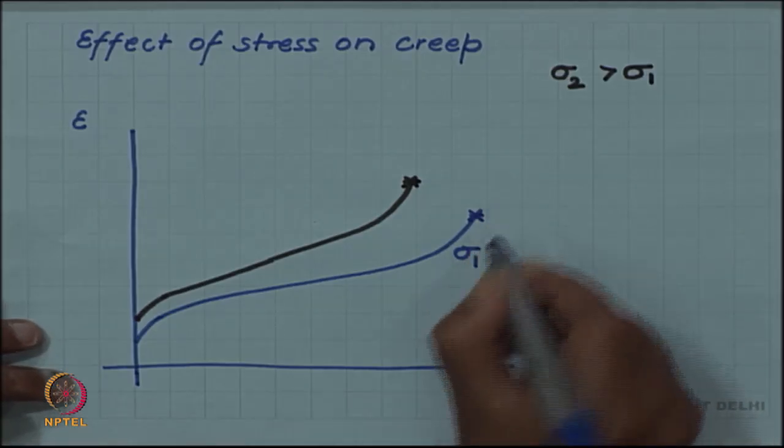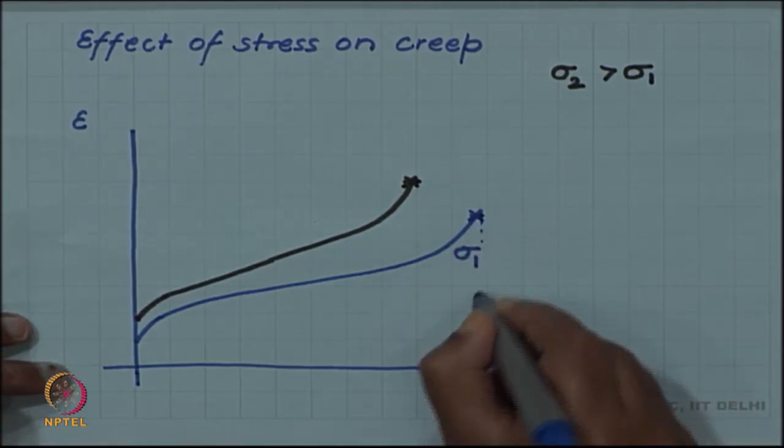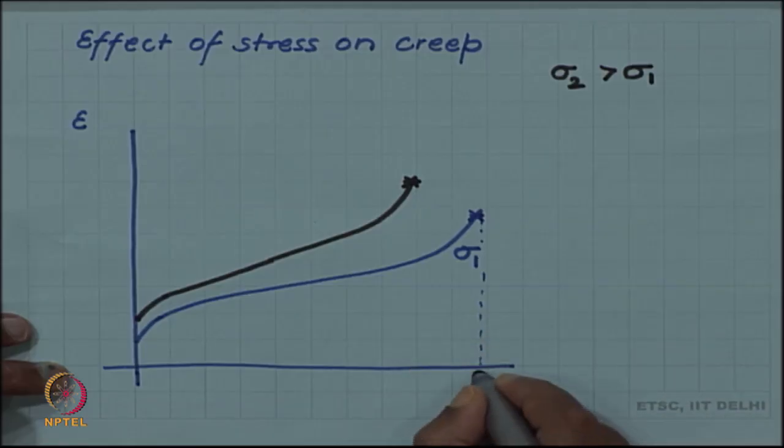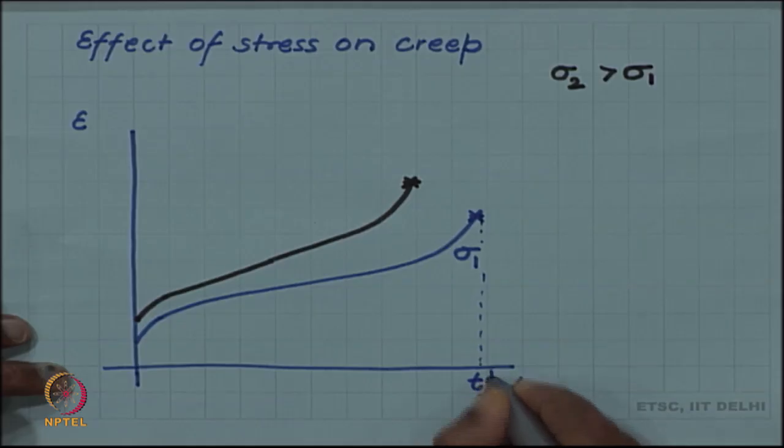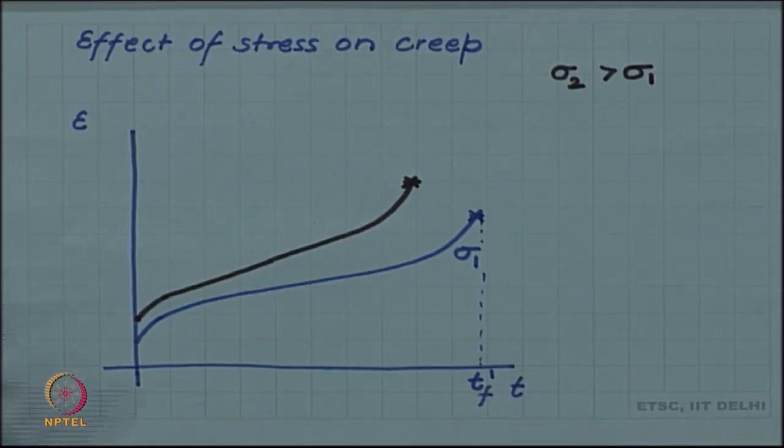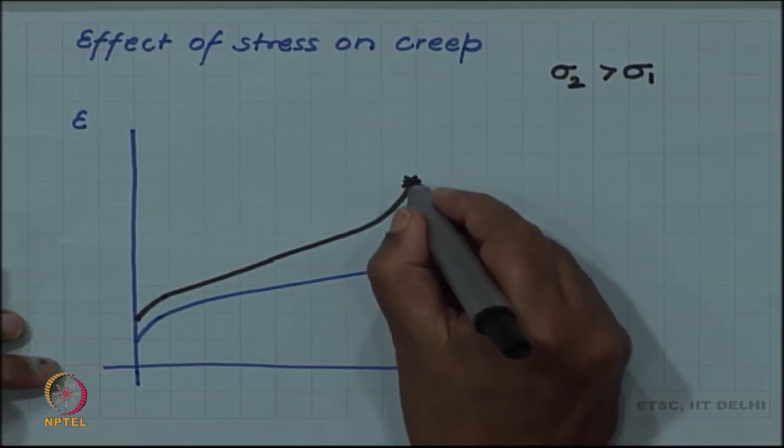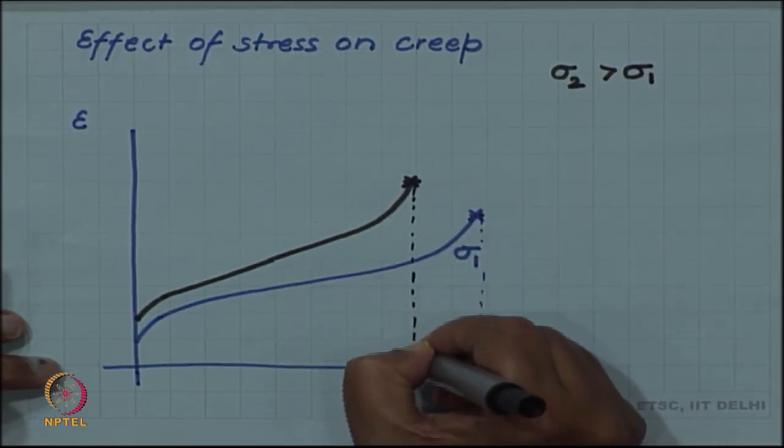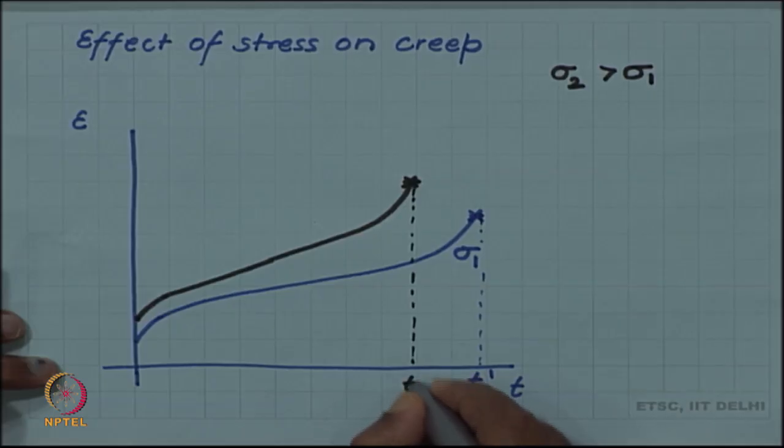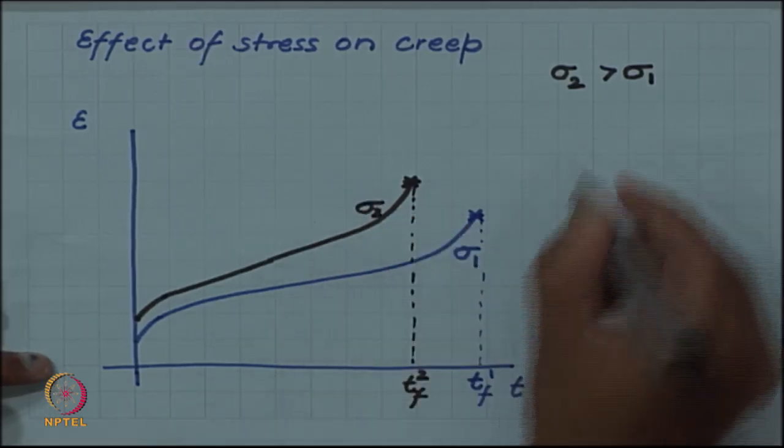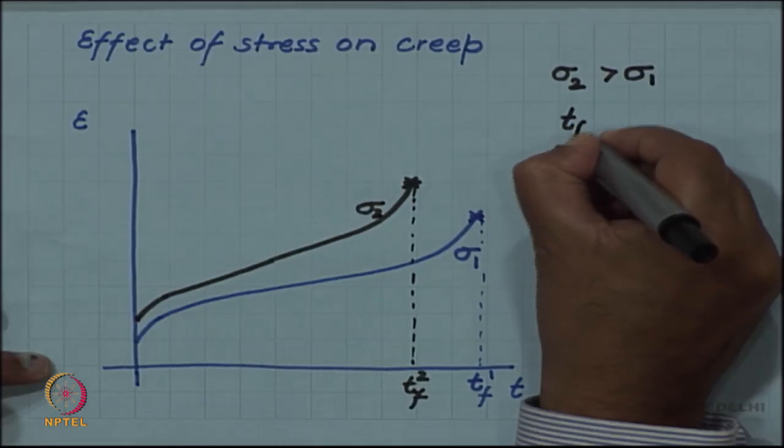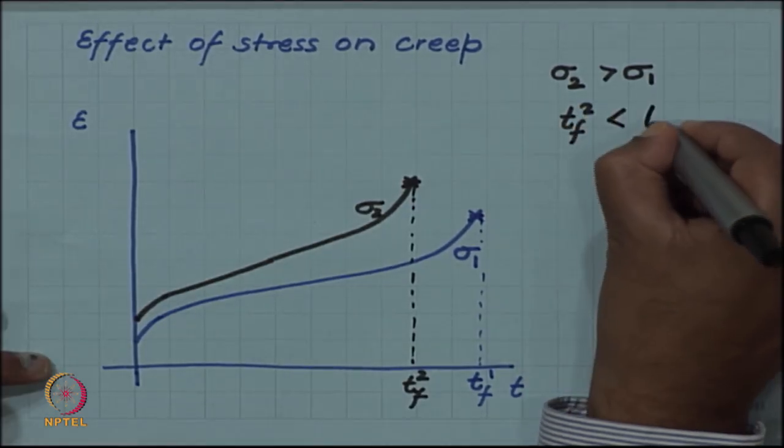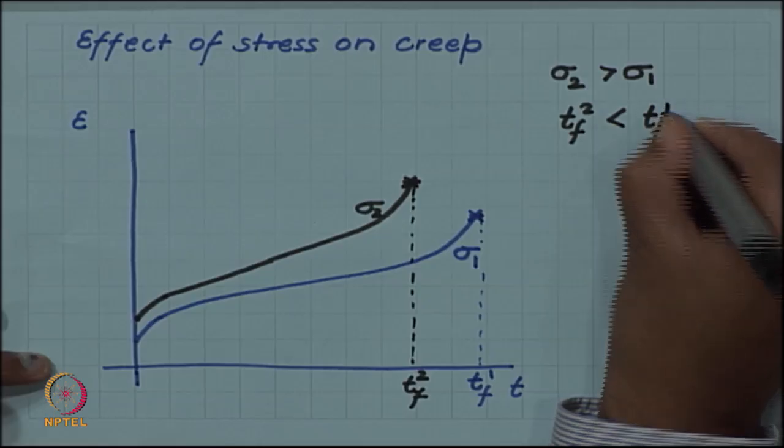If we have, let's say, a creep life of T f 1 at sigma 1, then the creep life T f 2 at sigma 2 is shorter. So T f 2 is shorter than T f 1.